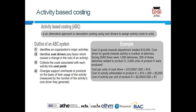Activity-based costing (ABC) is very important in healthcare — the NHS and WHO both use it. It is an alternative approach to absorption costing, using cost drivers to assign activity costs. To apply ABC, you identify the organization's major activities, identify the cost driver (the factor that causes cost to change), collect costs associated with each activity into a cost pool, and then assign costs based on the cost drivers they generate.